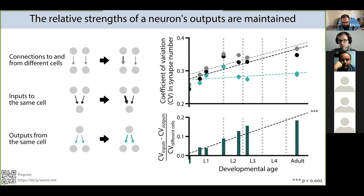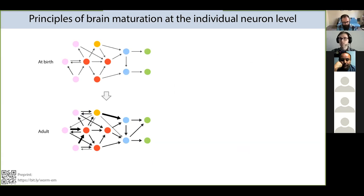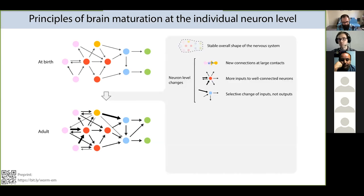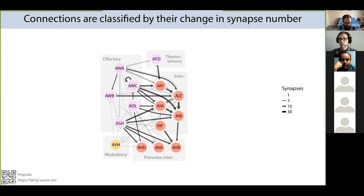In summary so far, the maturation of the connectome is not simply uniform but follows certain principles evident at the level of individual neurons. These principles are derived from overall statistical analysis of anonymous neurons. One beauty of the worm is that we can identify individual cells across different animals, so we can examine exactly which connections between named neurons actually change.